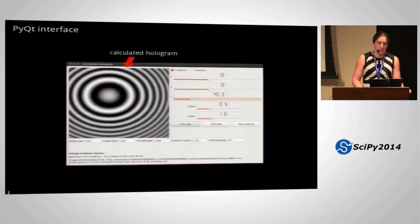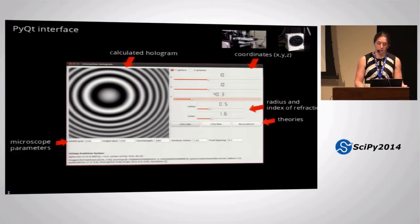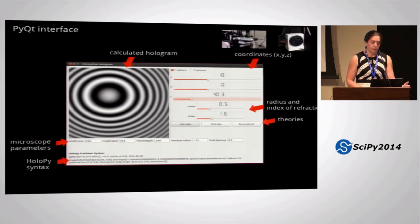So with 20 frames per second, I was able to go ahead and build an interface in PyQt, and I show the calculated hologram, the XYZ coordinates, which are akin to the knobs that I'm used to turning on a microscope, that's how I usually interact with my science, the radius and index of refraction, which is how you characterize the material, the different theories that I want to be able to compare to one another, and parameters about the microscope, like the wavelength of light that you're using, as well as the syntax for how HoloPy describes an object with all of these parameters, so that you can go back to HoloPy and write some scripts.